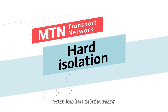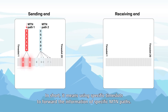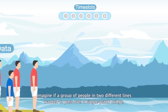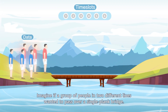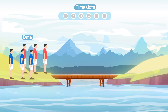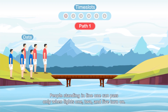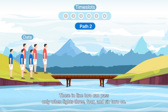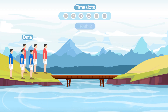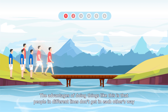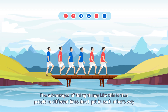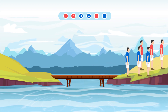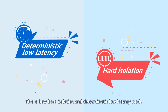What does hard isolation mean? In short, it means using specific time slots to forward the information of specific MTN paths. Imagine if a group of people in two different lines wanted to pass over a single plank bridge. People standing in line 1 can pass only when lights 1, 2, and 5 turn on. Those in line 2 can pass only when lights 3, 4, and 6 turn on. The advantage of doing things this way is that people in different lines don't get in each other's way, and waiting times to cross the bridge are relatively short and fixed for each line. This is how hard isolation and deterministic low latency work.